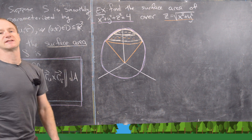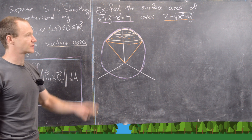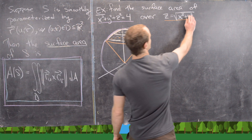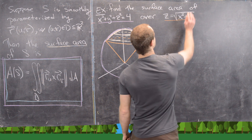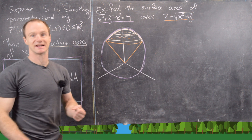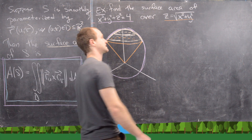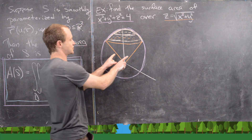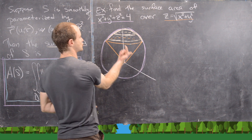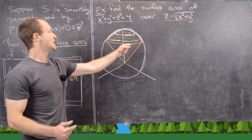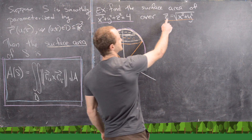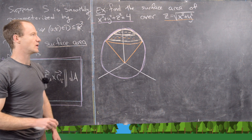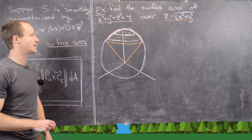This is far into a multivariable course so hopefully we know that's a cone, but just to be sure: if we cover up the y we get z = √(x²) which is z = |x|. Then it looks like z = |y|, so it opens in a straight manner. And if we set z equal to a constant we essentially get the equation for a circle in x and y, confirming it's a cone.